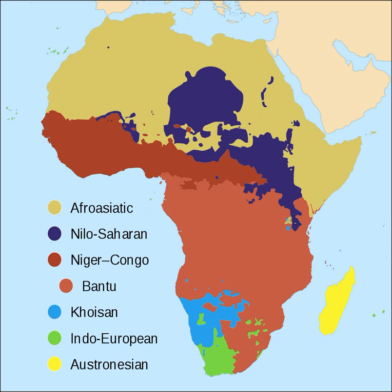Austronesian languages are spoken in Madagascar. Indo-European languages are spoken in South Africa and Namibia — Afrikaans, English, German — and are used as lingua francas in the former colonies of Britain, France, Belgium, Portugal, and the remaining Afro-Portuguese islands, and the current Spanish territories of Ceuta, Melilla and the Canary Islands.